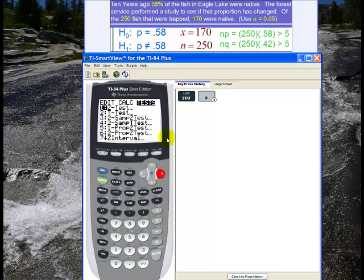And since we have a proportion that we're studying, and it's a single proportion, we're going to go to 1-prop Z test. That's number 5, so if I hit 5, that sends me to the 1-prop Z test.